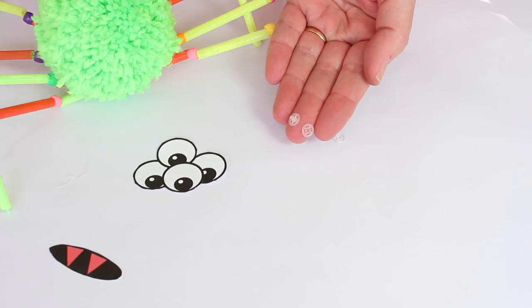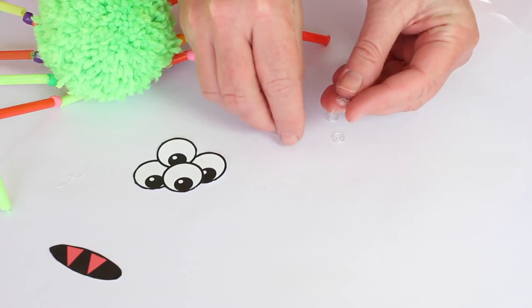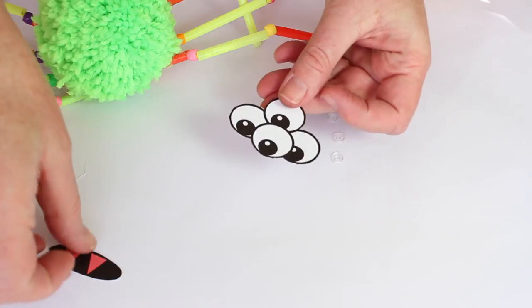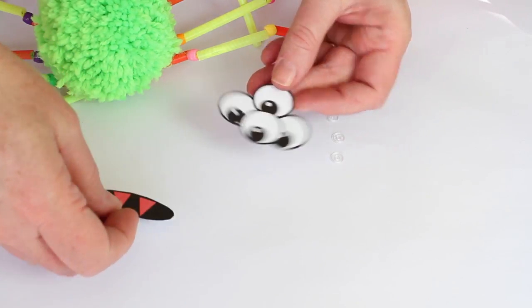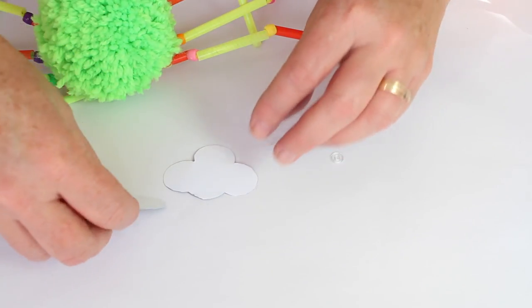To connect the eyes we use the plastic press studs. One part of the press stud you glue to the eyes and the other part of the stud you glue to the pom-pom. Do the same with the mouth pieces as well.